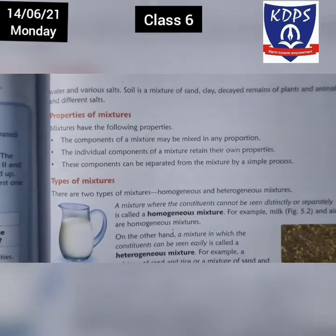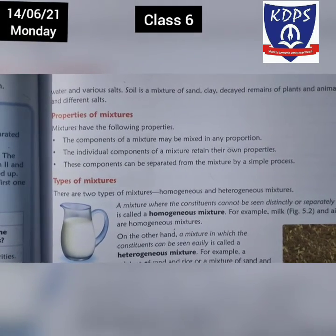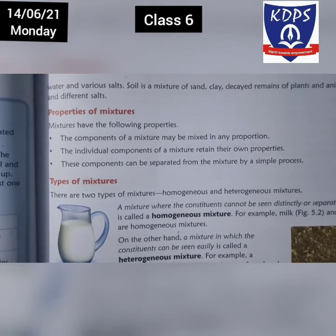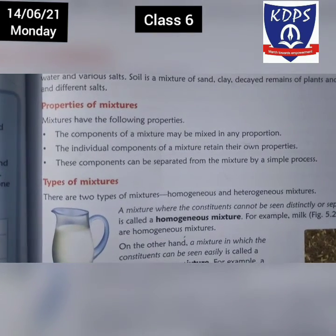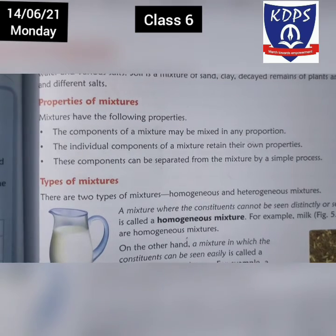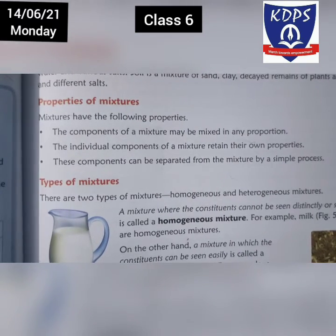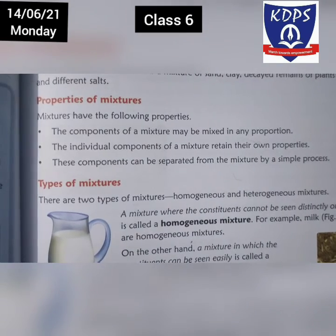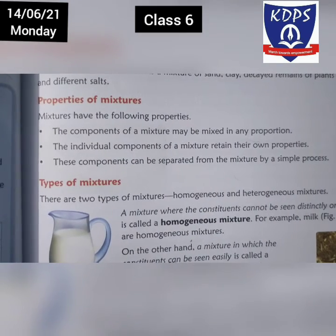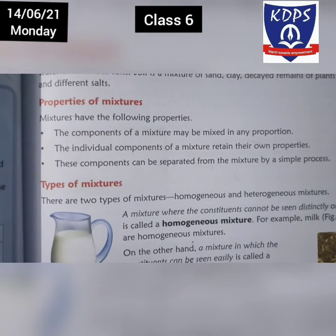An impure substance is a mixture of two or more substances. Pure substance mein same kind of substance hote hain, but mixture mein bahut substances hain toh woh impure ho gaya. These substances are called constituents or components of the mixture. Examples: milk is a mixture of water, cream, calcium, vitamins, and so on. Air is a mixture of gases — nitrogen, oxygen, carbon dioxide and many more. Sea water is a mixture of water and various salts, and soil is a mixture of sand, clay, remains of plants and animals, and different salts.